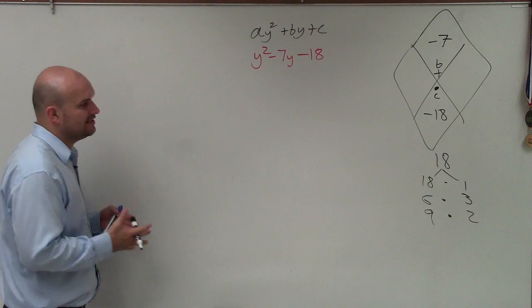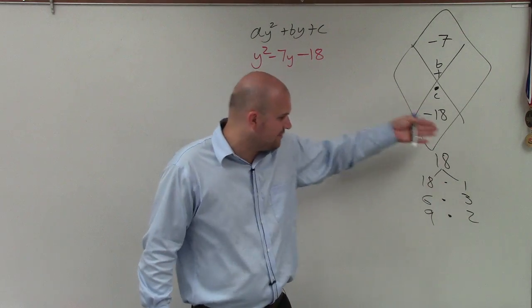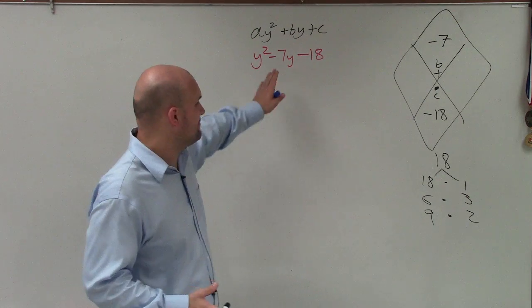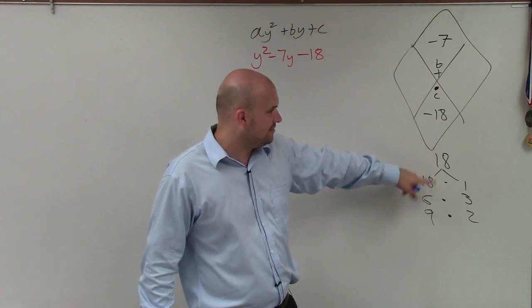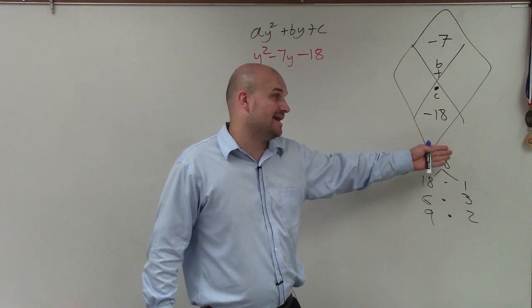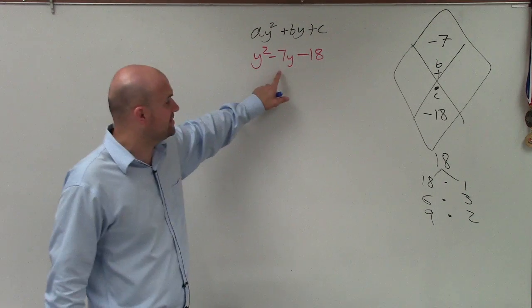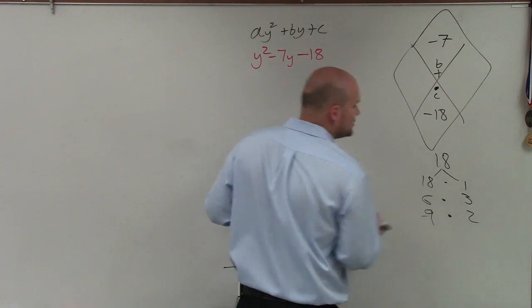Now, all I simply need to do is say, which one—one's positive, one's negative—that I can add to give me negative 7? Because they all multiply to give me 18, or if one's negative, to multiply to give me negative 18. But which one of them, if one's negative, one's positive, would add to give me negative 7? Well, if I have a negative 9 and a positive 2, that will work.